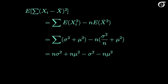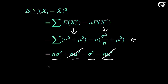Substituting in the expectation of x squared and the expectation of x bar squared, sigma squared and mu squared are constants being summed n times, giving n times sigma squared and n times mu squared. Multiplying through by n on the second term leaves sigma squared and n times mu squared. These mu squared terms cancel, and overall we are left with n minus 1 times sigma squared.